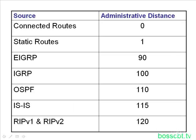Here's the table of sources of information and their related administrative distances, listed in order. At the very top are connected routes, and at the very bottom are RIP version 1 and version 2. Connected routes are always preferred to static routes. Static routes are always preferred to EIGRP because their administrative distance is drastically lower. IGRP is less preferred than EIGRP, OSPF below that, and so on. Definitely commit these to memory. When you are working on a problem in a network or a design scenario, you need to keep administrative distances in mind.